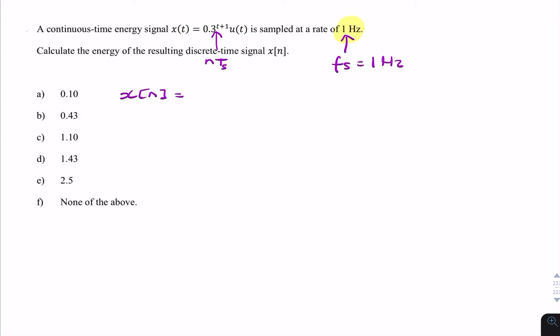From that, we can find T. It's the reciprocal of the sampling rate, so it's 1 over 1, that's one second. We're replacing t with nT, so we replace t with n times 1, which is n. So each of these t's, there's a t up here and a t there, we replace that with n. So our expression now becomes 0.3 to the power n plus 1 u of n. So this is my discrete time signal. That's the first stage in answering the question.